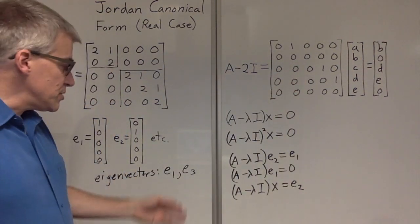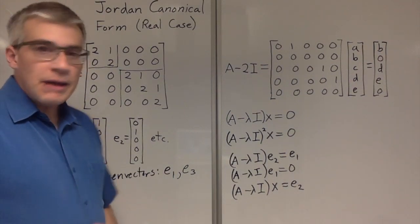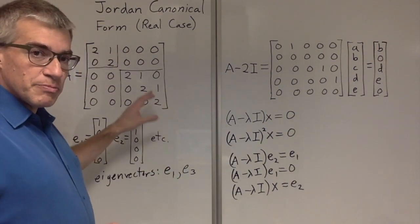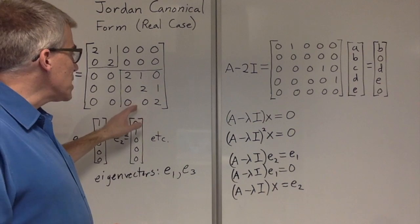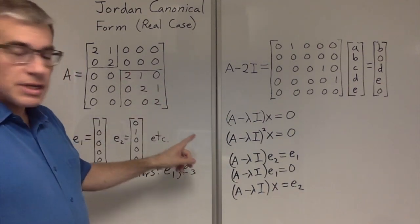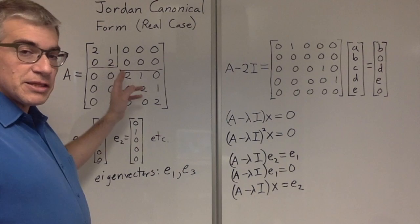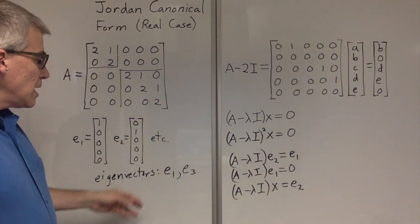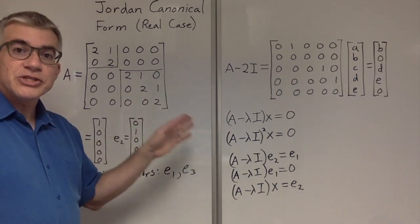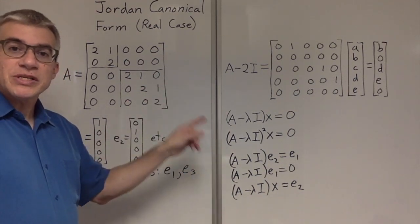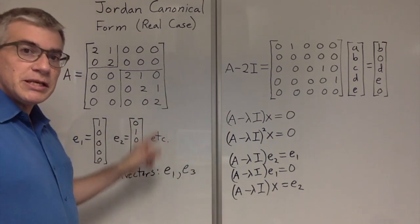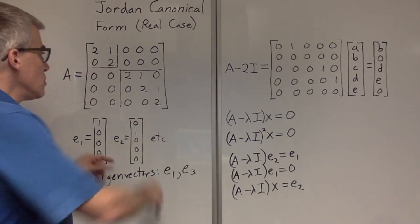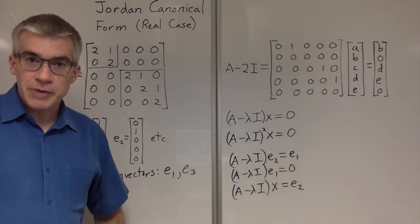The other eigenvector is E3. And you can probably guess from the way the structure of the matrix is set up is that E4 is the generalized eigenvector that maps onto E3, which maps onto 0 using this matrix. And E5 is a generalized eigenvector that maps onto E4, which then maps onto E3. You have a chain of length 3, which makes the Jordan block, which is 3 by 3.